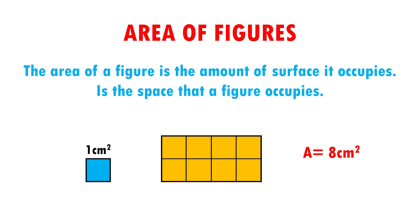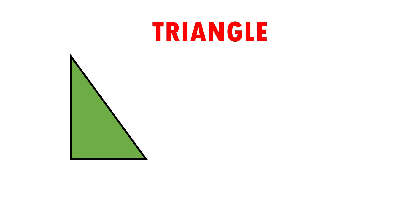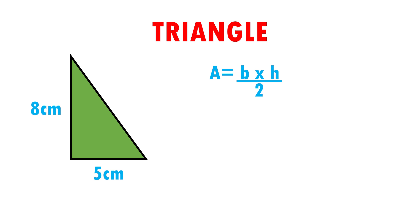Let's see an example. Here I have a triangle. Its base is 5 cm and its height is 8 cm. The formula to calculate the area of a triangle is: area is equal to base times height over 2.